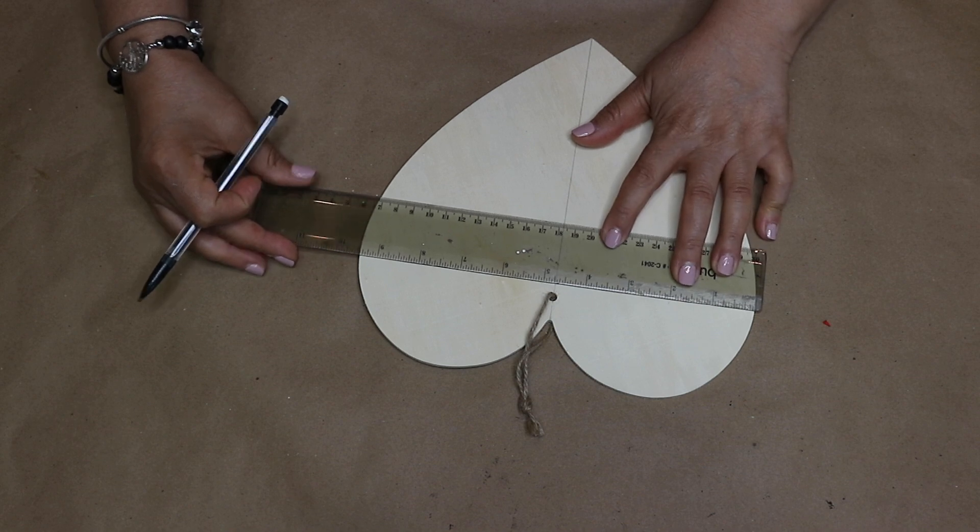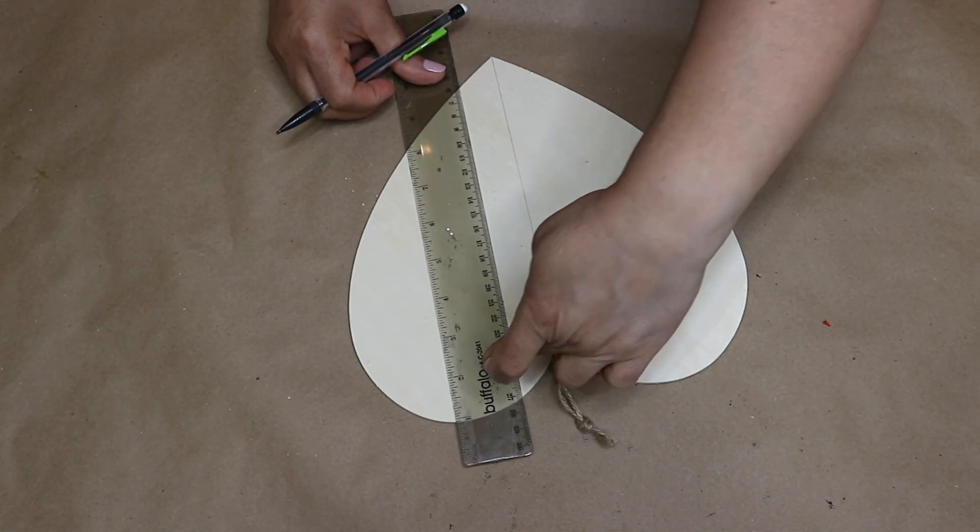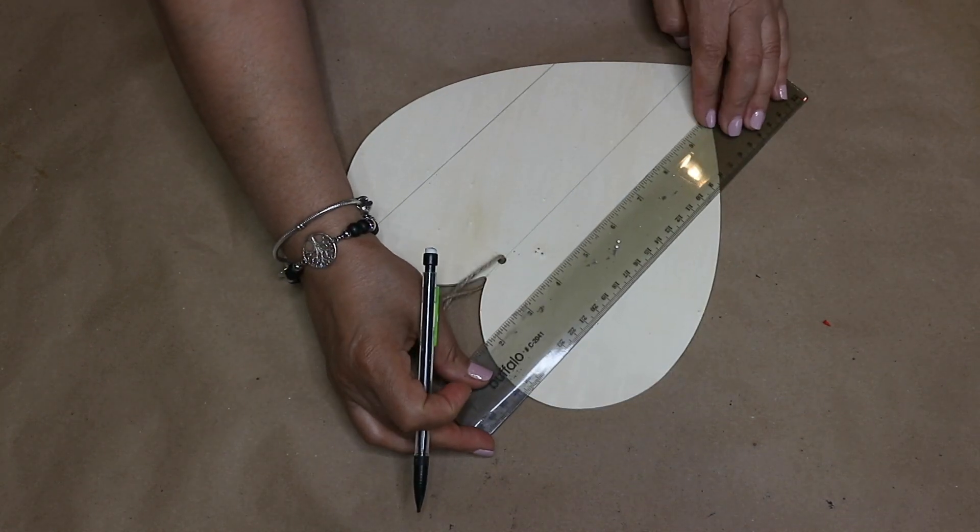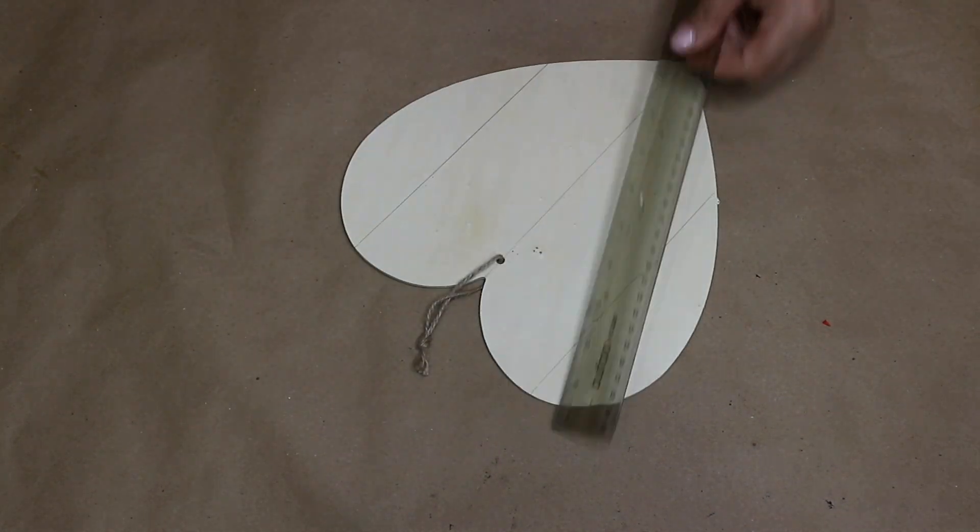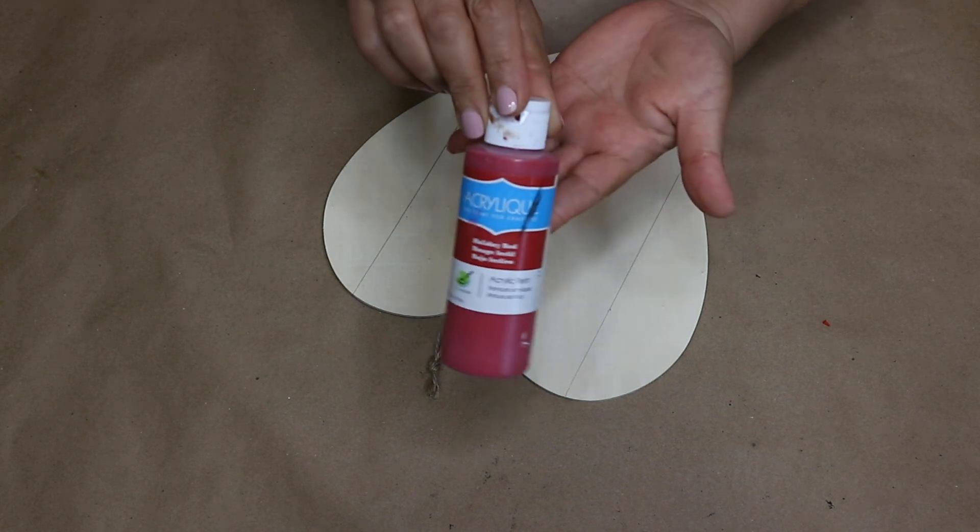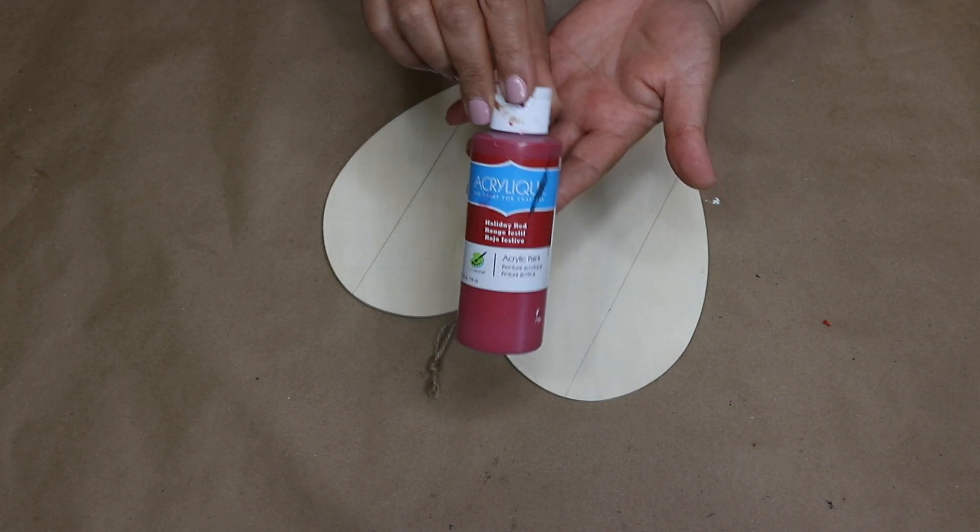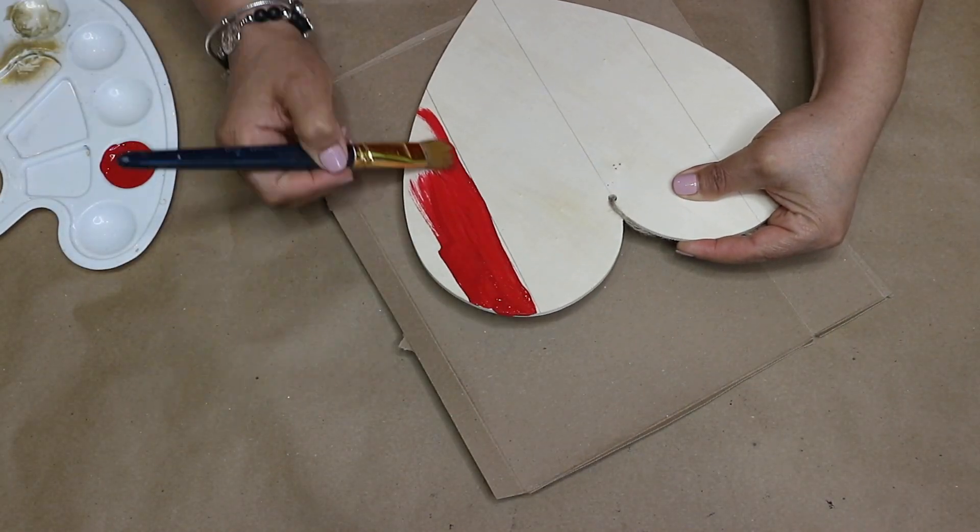So at first I am gonna draw a line in the middle, then I will measure about two inches on each side where the widest parts are on the heart. Then I will draw some straight lines as you see me doing. Next I'm gonna use some of this acrylic red paint and start painting the two areas on each side.